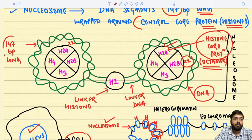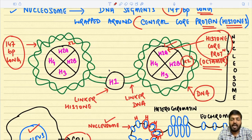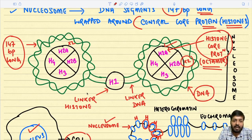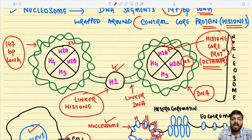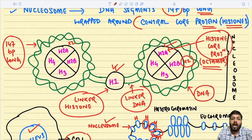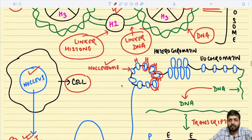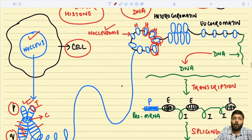Multiple nucleosomes are linked with each other with the help of a linker histone called the H1 linker histone. This H1 linker histone is attached to the nucleosomes by means of linker DNA — which is comprising 20 to 80 nucleotides. The linker DNA along with the linker histone connects two nucleosomes together.